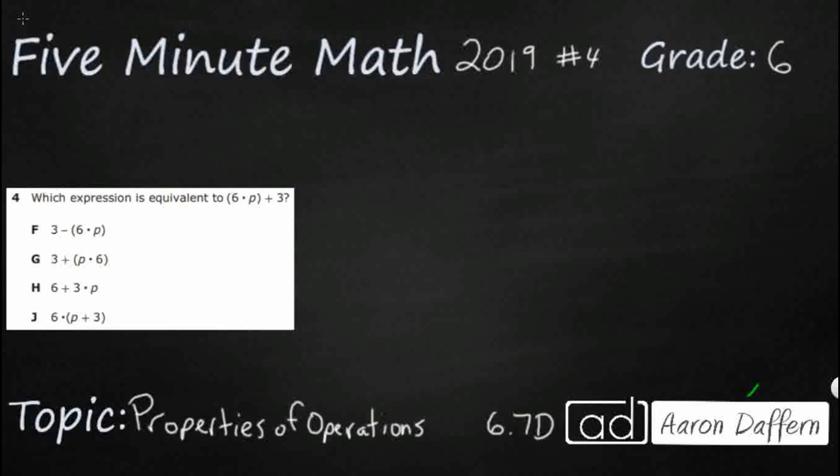So we need to find an equivalent expression to six times p plus three. We don't really need these parentheses as they are right now. We would do the multiplication before this addition, but it's going to be helpful because we might need them with the associative property.